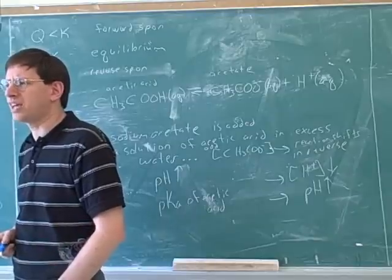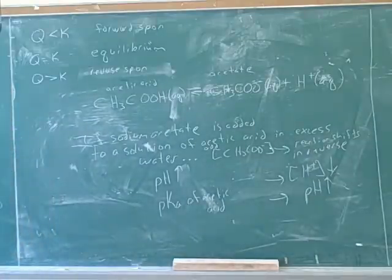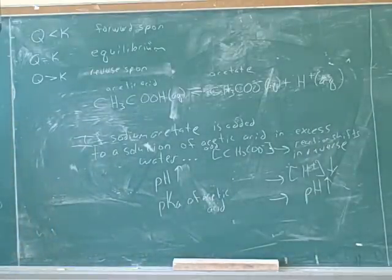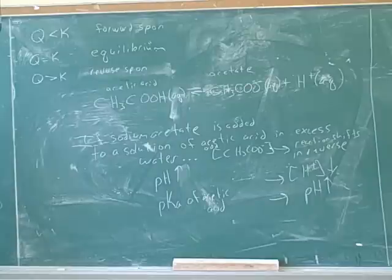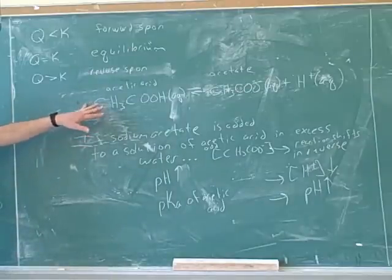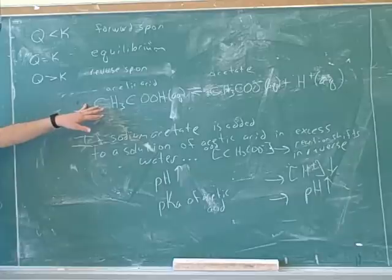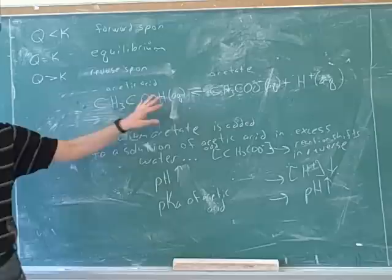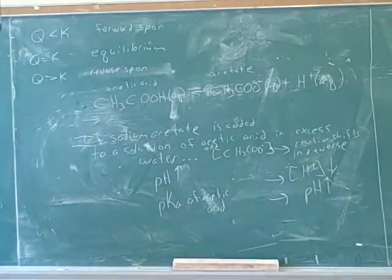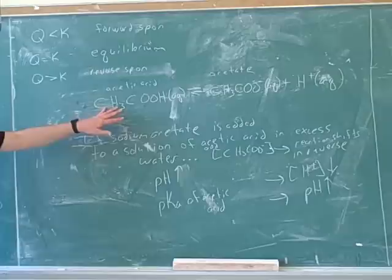Now, if we add more sodium acetate, we know that will increase the pH. What effect would that have? What effect would the extra sodium acetate have on the pKa of the acetic acid, is the question. It would also increase. Now, let's think about that. So, how do you calculate the pKa? You take the negative log of Ka.